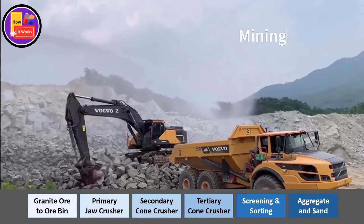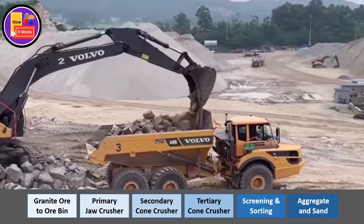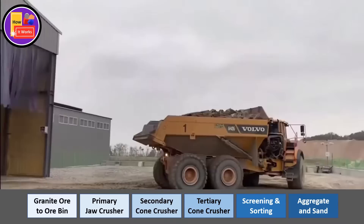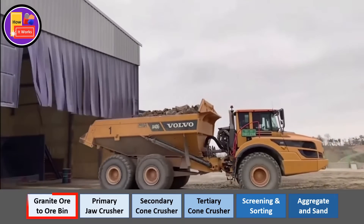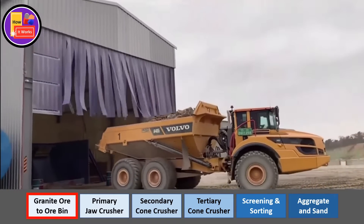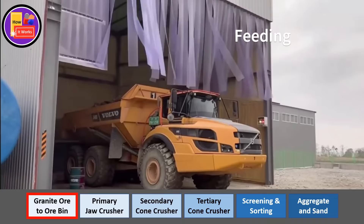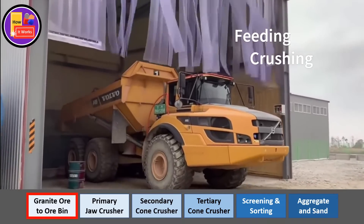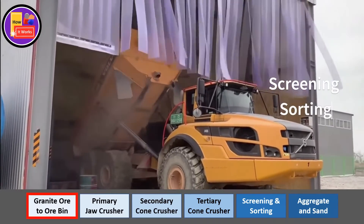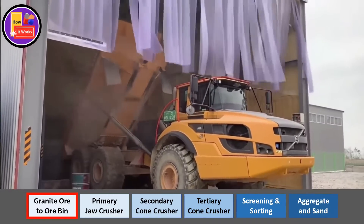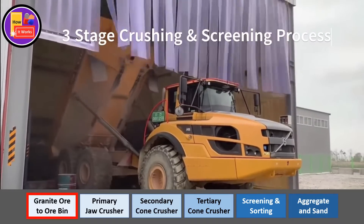Construction aggregate is a very important material. It makes the concrete and bitumen mixture compact and strong. The aggregate production process consists of many stages of feeding, crushing, screening and sorting systems. Here, we will see three stages of crushing and screening process.